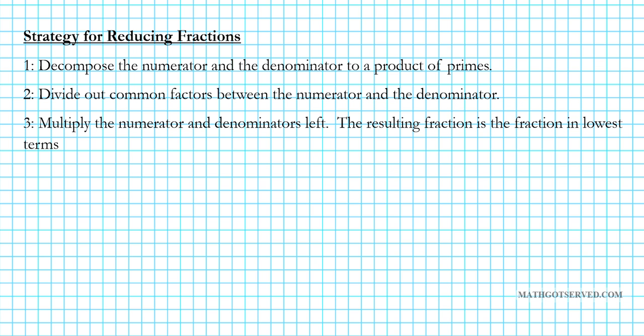Let's go into reduction of fractions. There are two different ways you can reduce fractions: by decomposition, or by using the GCF. We're going to use the decomposition approach here. The strategy is: first, decompose the numerator and the denominator into a product of primes using your factor tree. Second, divide out common factors between the numerator and the denominator. Lastly, multiply the numerator and denominator horizontally. The resulting fraction is in lowest terms.